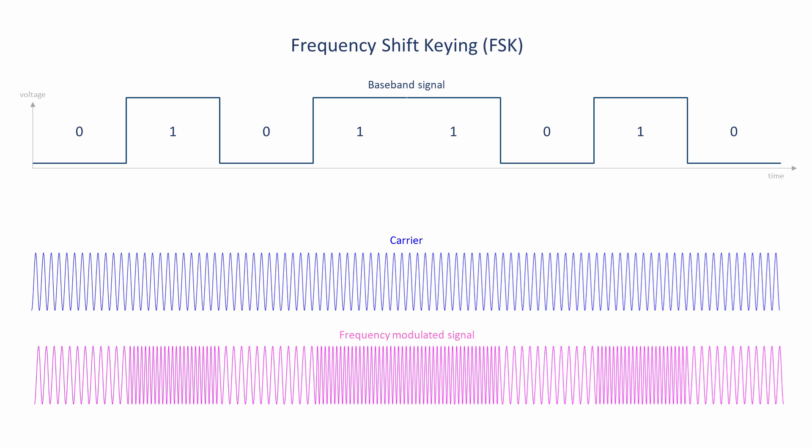a 1 is represented by a relatively high frequency in the modulated wave, and a 0 by a lower frequency.